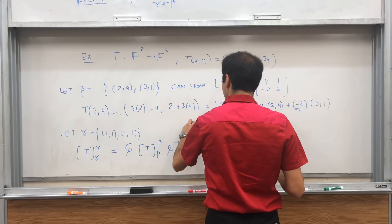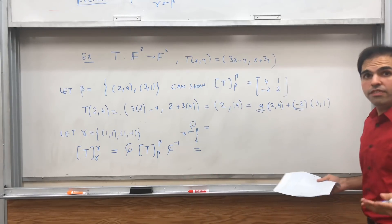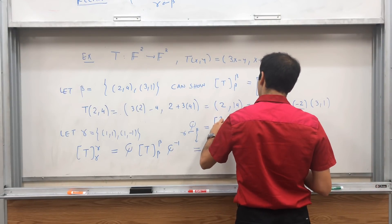Where Q is the change of coordinates matrix from beta to gamma, and in a previous video I calculated that to be 3, -1, 2, 1.